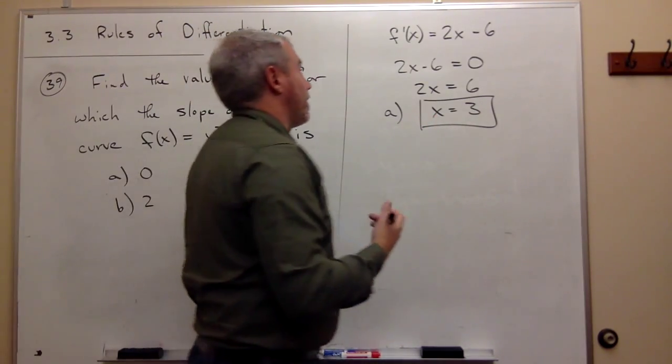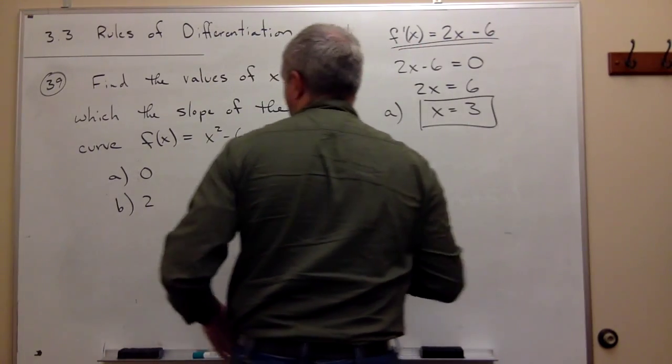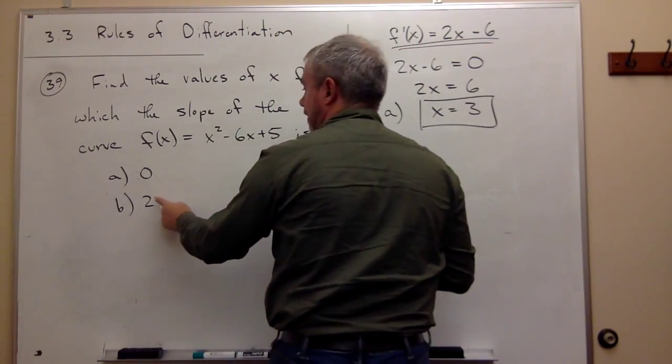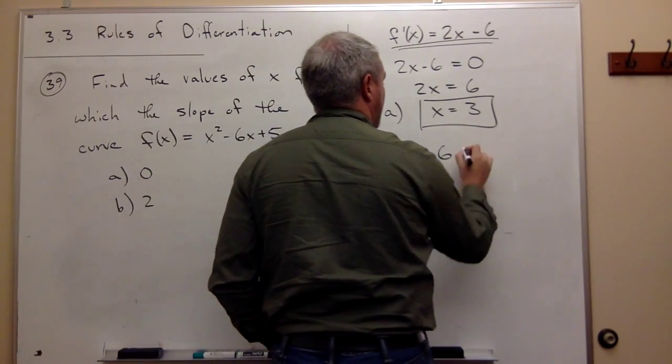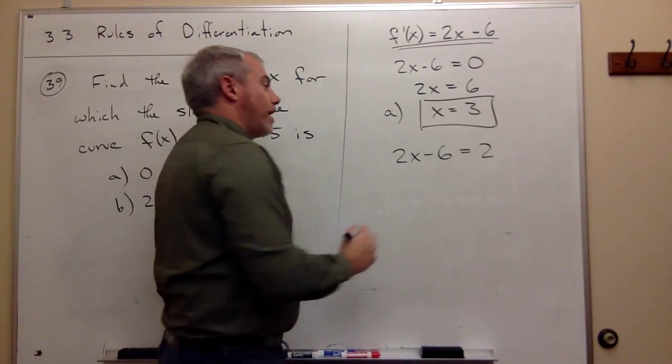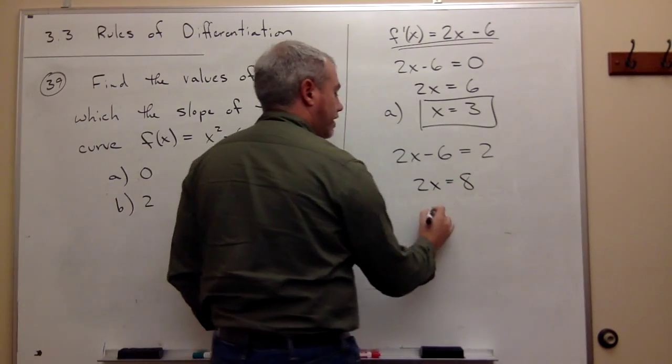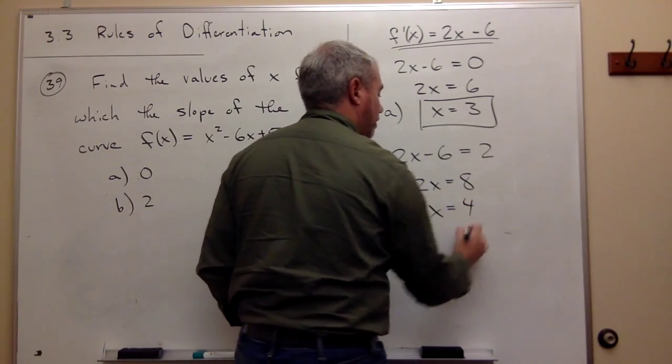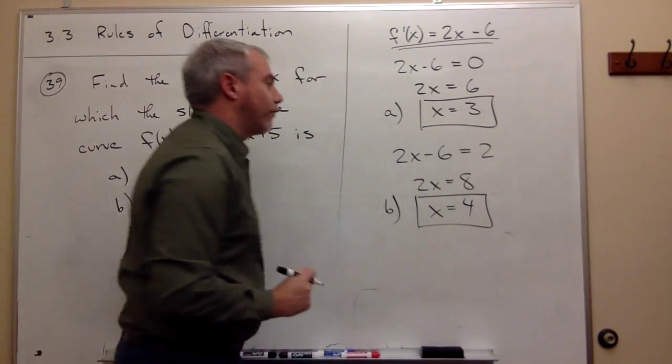Now let's think about part b. I already have the derivative, and I want to know where is the derivative equal to 2. So I take the derivative, 2x - 6, and set it equal to 2. Then I solve for x, so I get that 2x equals 8, so x would have to equal 4. So the answer to part b is that x is equal to 4.